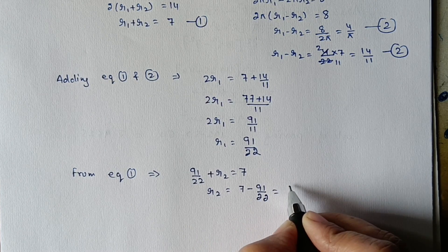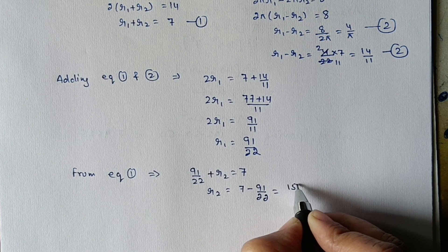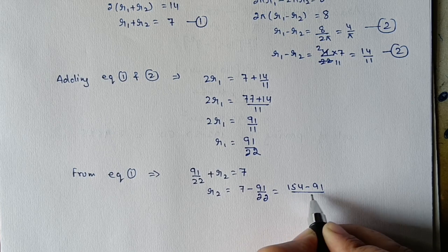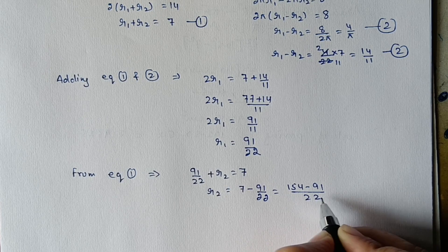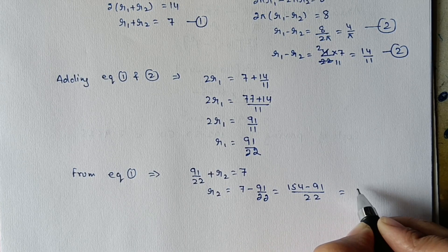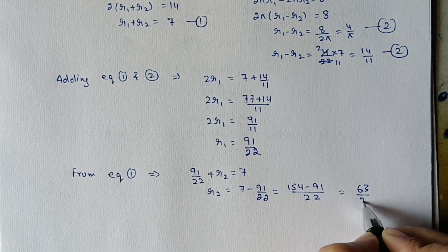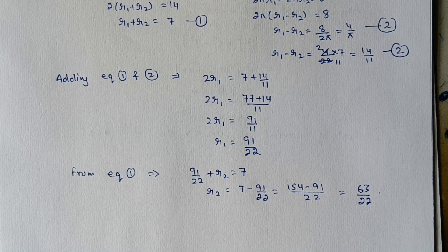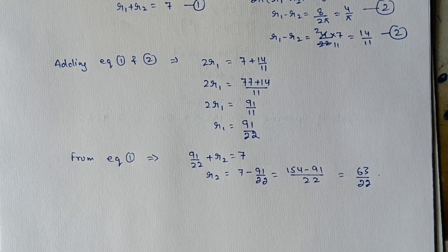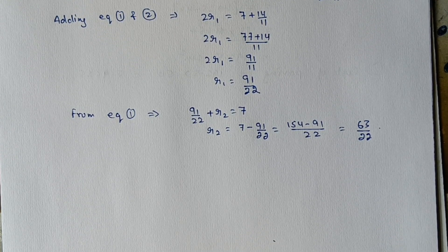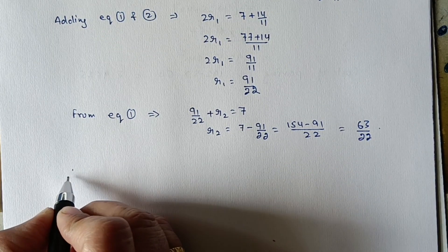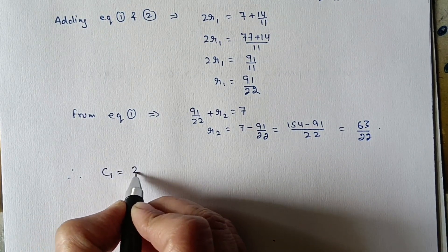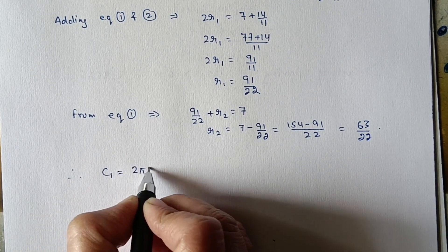Taking LCM: r2 = 154 − 91 upon 22 = 63 upon 22. This is the value of r2. Now we have to find the circumferences C1 and C2. C1 = 2πr1.